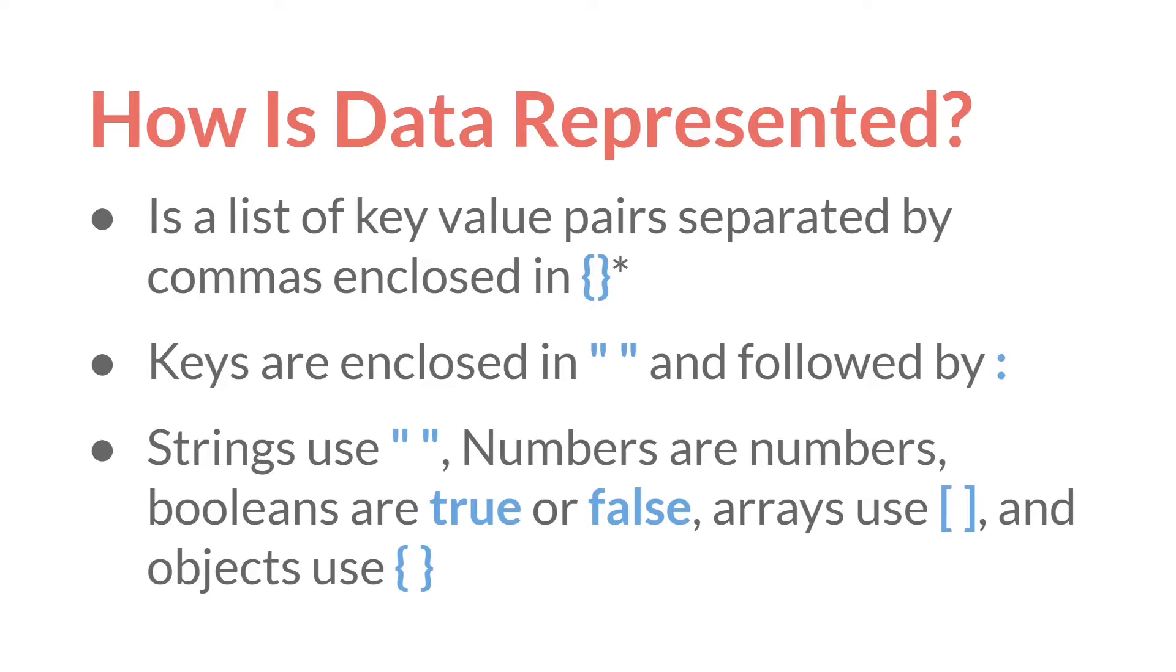So the first thing you know is the JSON file is a list of key value pairs separated by commas and enclosed in brackets. And I have an asterisk here because this is actually a slight oversimplification. You can also have the top level of a JSON file be an array. But it's normally taught with the top level being an object. And in fact GameMaker essentially requires this. Top level should always be open brackets, closed brackets.